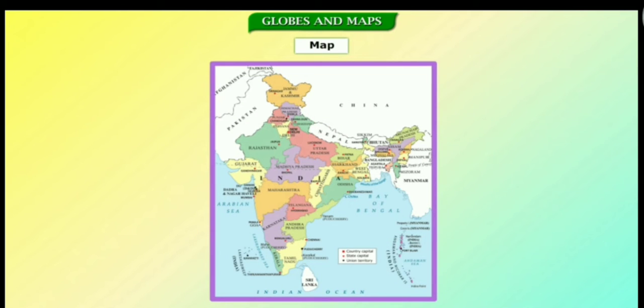A map is a graphical representation of the Earth's surface drawn to scale on a sheet of paper.